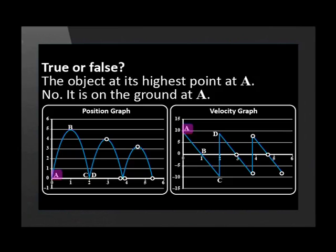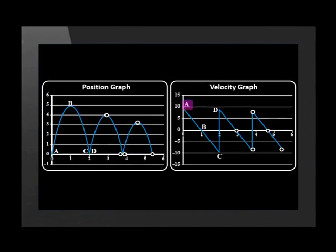Let's discuss the answers. Is the object at its highest point at A? No, it's on the ground at A. The point is high up on the VT graph because the ball is moving quickly upward at this point. Is the object at its highest point at B? Yes. Its velocity is zero here. A projectile has zero velocity at its highest point.